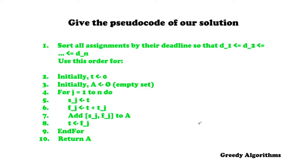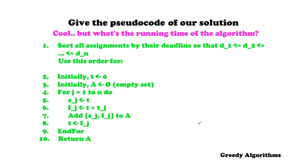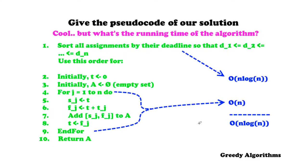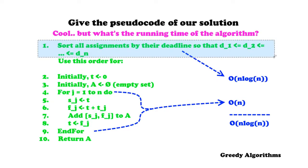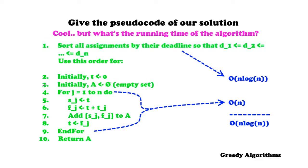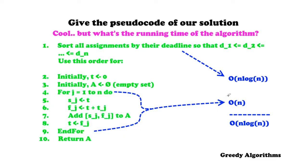An important question remains: what's the running time of the algorithm? There are two main parts. First, sorting all assignments takes O(n log n) in the worst case, for example using merge sort. Then the for loop iterates over n assignments, taking O(n). The dominant term is O(n log n), which is actually quite fast and easy to derive.